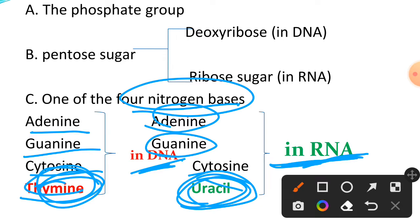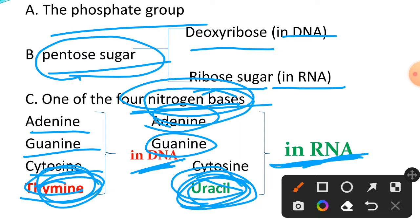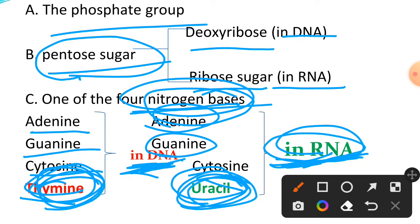The three components of a nucleotide are: the phosphate group, pentose sugar, and a nitrogen base. For DNA the sugar is deoxyribose; for RNA the sugar is ribose. The nitrogen base uracil is found in RNA but not DNA, while thymine is found in DNA but not RNA.